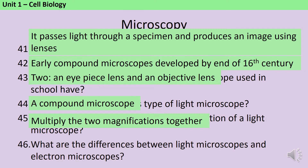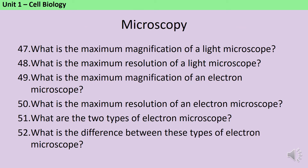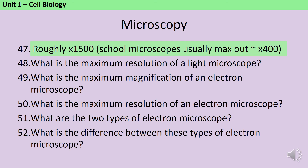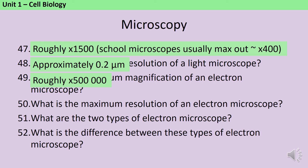Light microscopes use a beam of light, whereas electron microscopes use a beam of electrons, resulting in the electron microscope having both a higher magnification and a higher resolution. The maximum magnification of a light microscope is about 1500x, though school microscopes tend to max out at about 400x with a 10x eyepiece lens and a 40x objective lens. The resolution is about 0.2 micrometres, meaning you can see differences between individual cells but not really subcellular structures. In comparison, an electron microscope has a much higher magnification — as much as 500,000 or even a million times — and the resolution is down to about 1 nm, meaning we can see individual subcellular structures and even their ultrastructure.